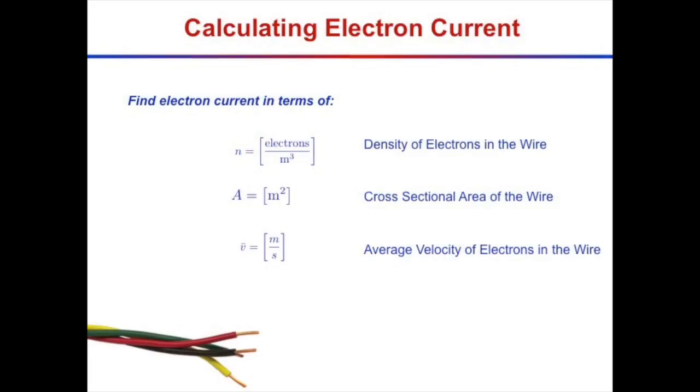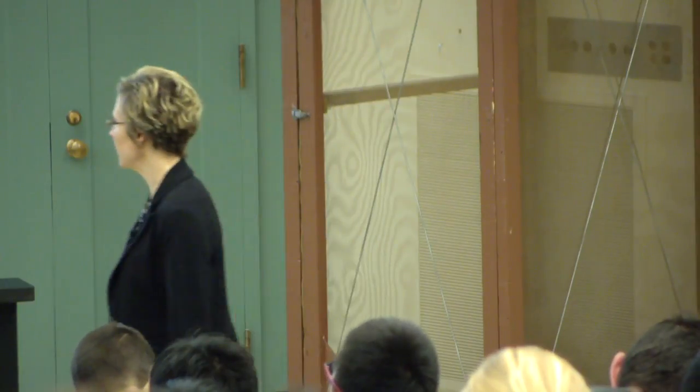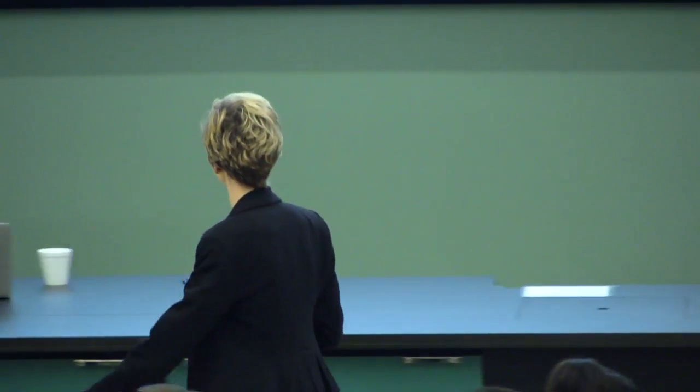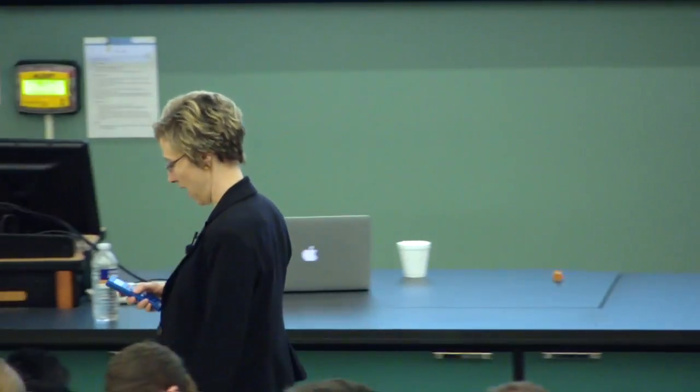V is the average velocity of electrons in the wire, in meters per second. That depends on the conditions — how you set up the circuit, what voltage you have across things.